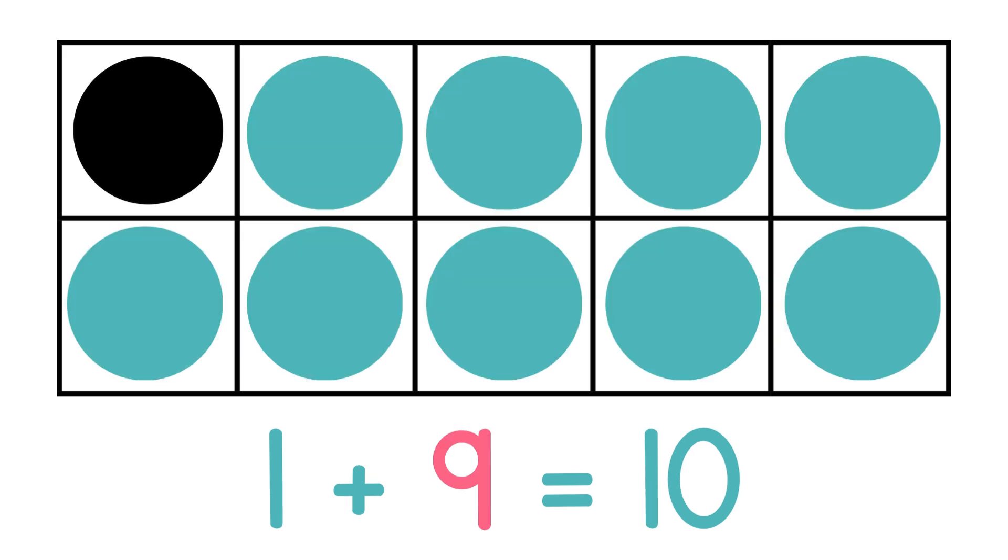Oh look, now I have 1 circle. So I have 10 boxes and one of the circles is filled. How many are empty, or how many more circles do I need? 1 plus what makes 10? 1 plus 9.